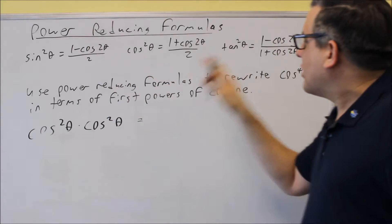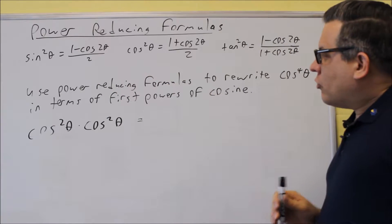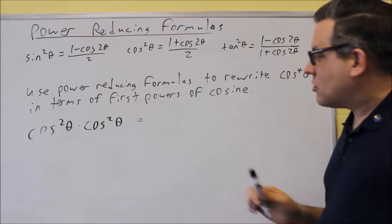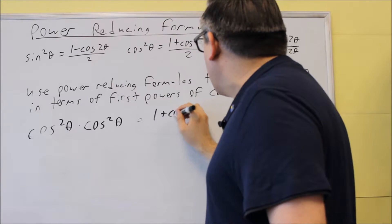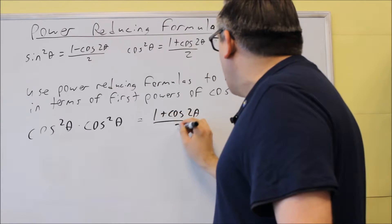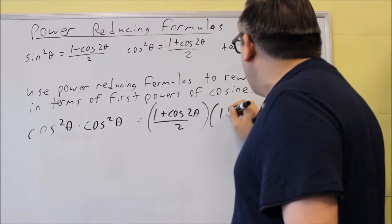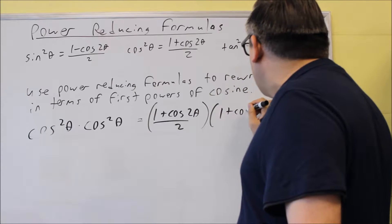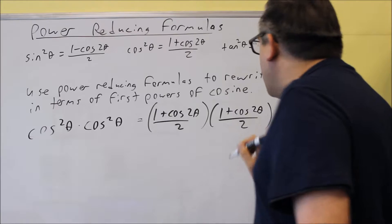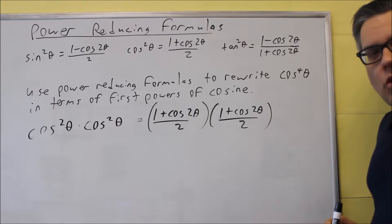In this case we're not going to use the sine or the tangent formula — we're just going to use the cosine squared formula twice. So we put in (1 + cos(2θ))/2 times (1 + cos(2θ))/2. Now we've got that written twice.